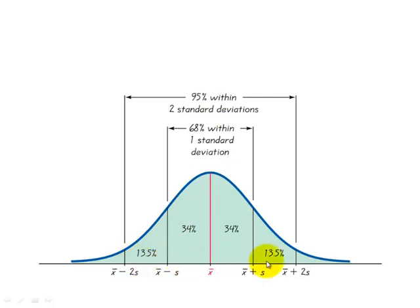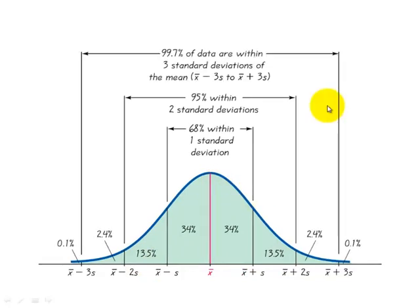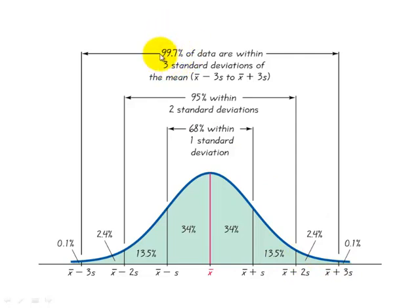So if we think of this as area, we would expect this area here to be approximately 95%. And if we go three standard deviations from the mean — one, two, three below and one, two, three above — we expect this to contain almost all the data, approximately 99.7%.